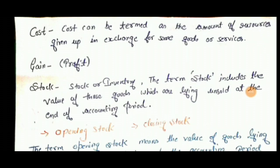Next term is cost. Cost can be termed as the amount of resource given up in exchange for some goods or services. For example, if you purchase raw material, that is your cost — the price you pay in exchange for purchasing something. Gain means profit.